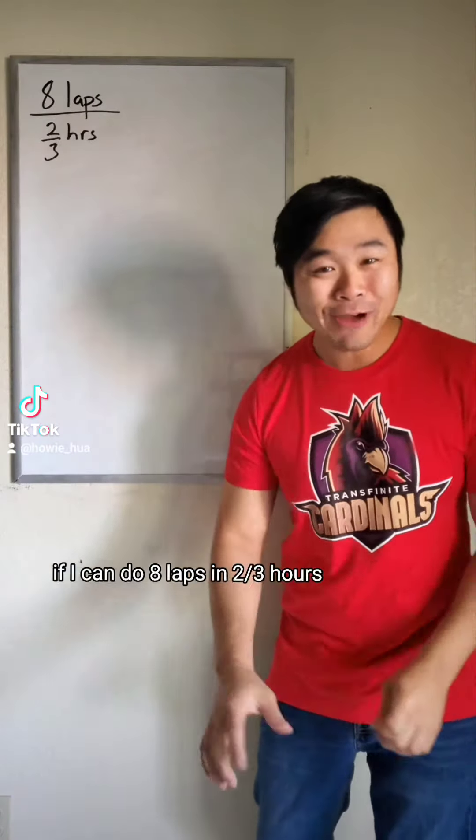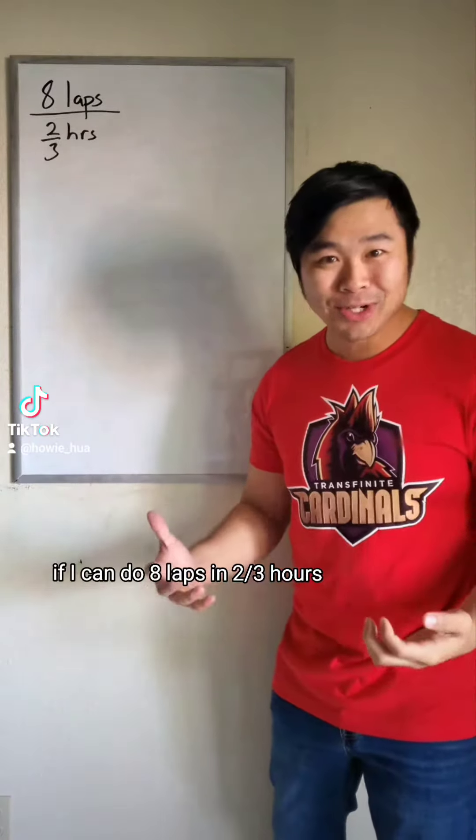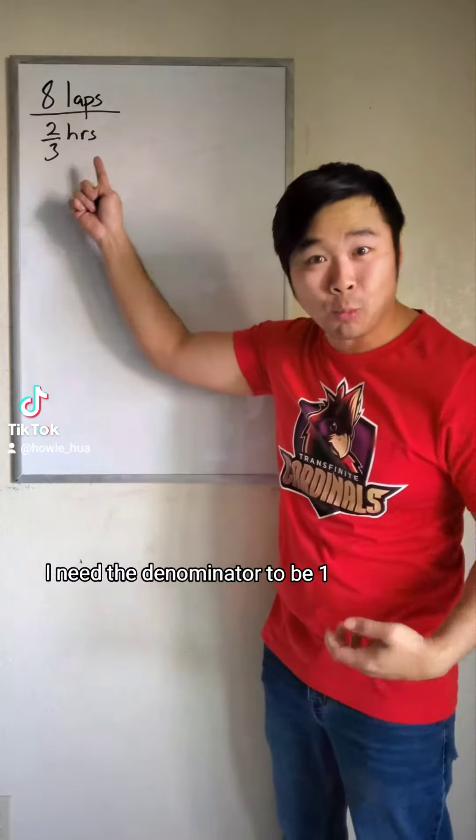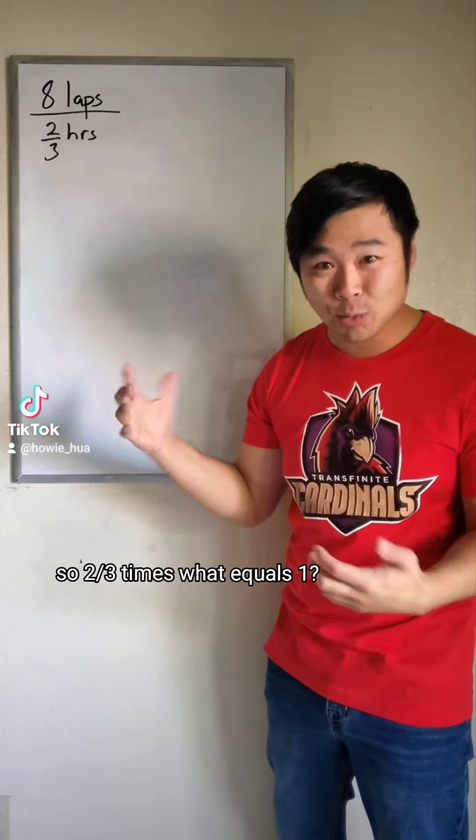Okay, last one. If I can do eight laps in two-thirds hours, how many laps can I do in one hour? Let's see. I need the denominator to be one, so two-thirds times what equals one?